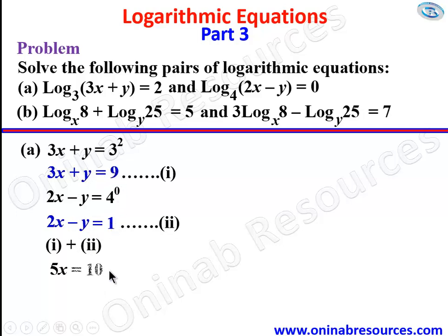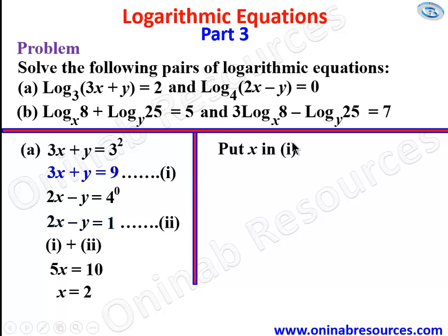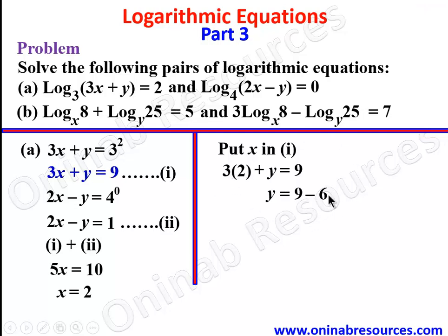9 plus 1 gives 10. Dividing both sides by 5, x is equal to 2. We go ahead to find the value of y by substituting x equals 2 into equation 1. So putting x equals 2 in equation 1: 3 times 2 plus y equals 9. That gives 6 plus y equals 9, so y equals 9 minus 6, and y is equal to 3. That is the solution to problem (a).